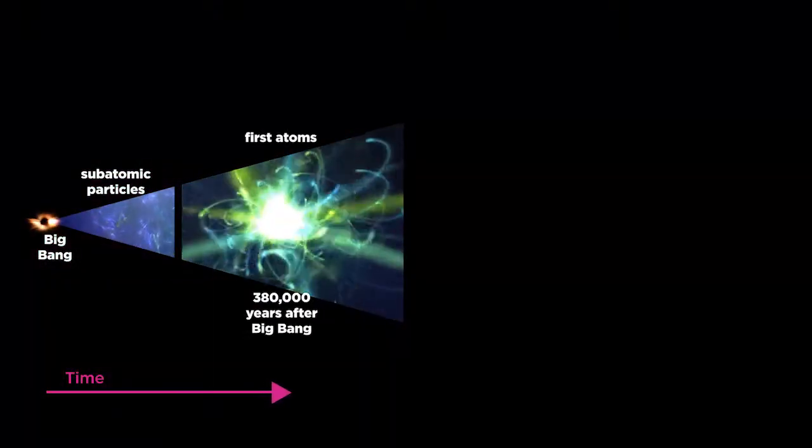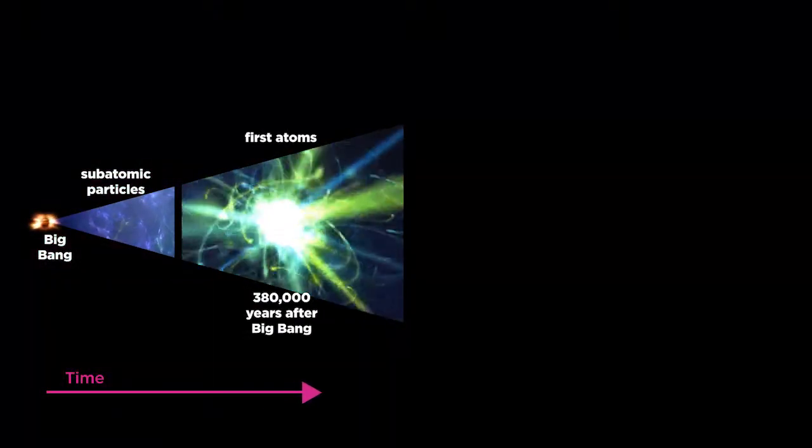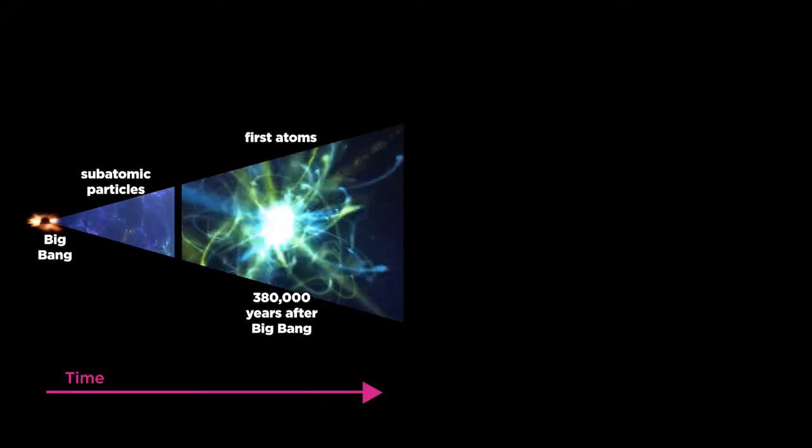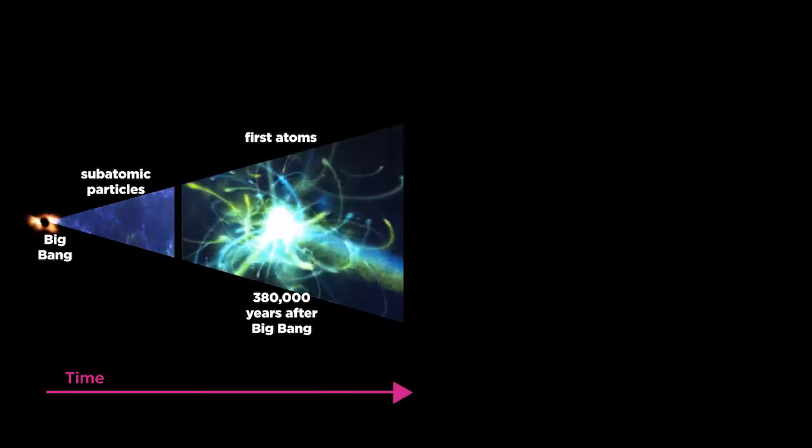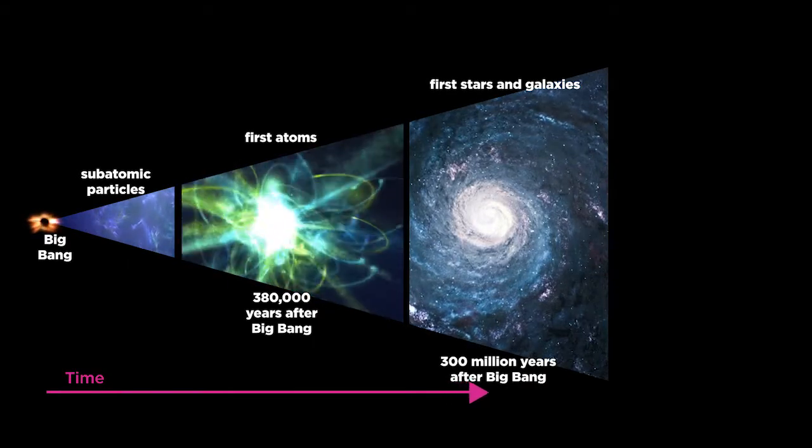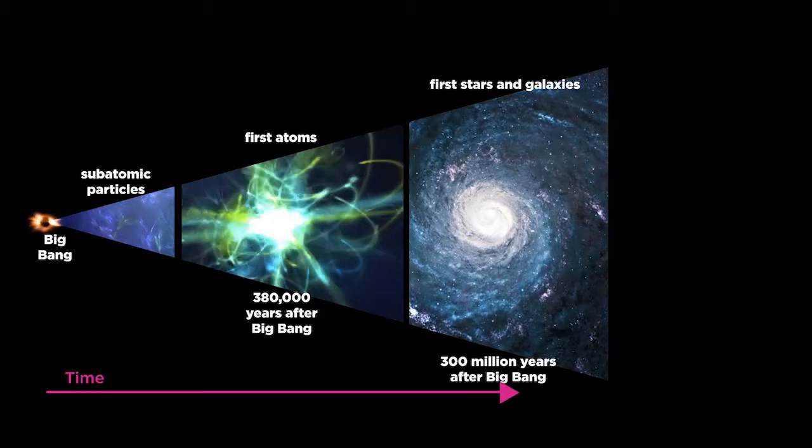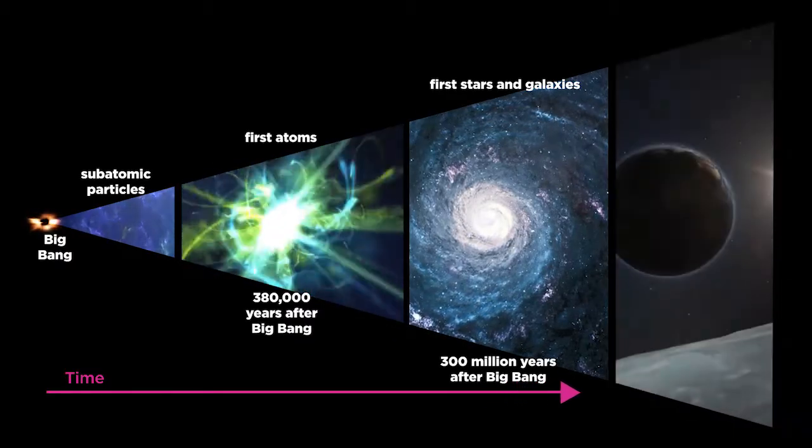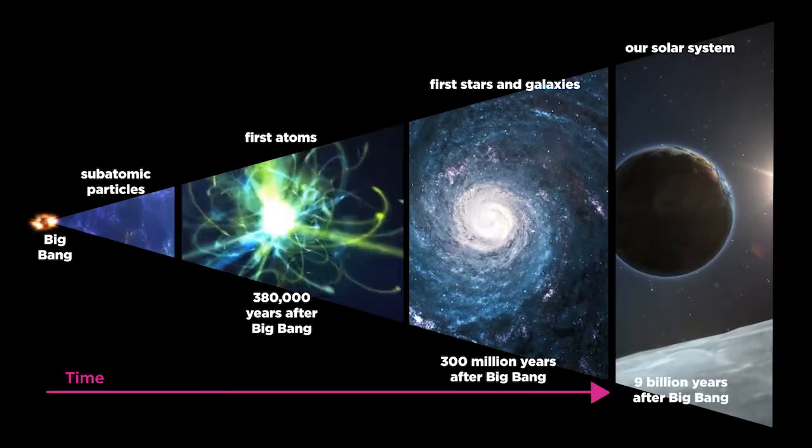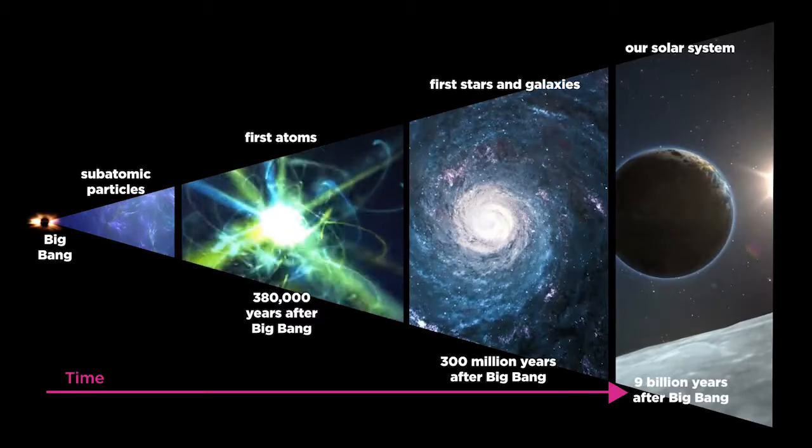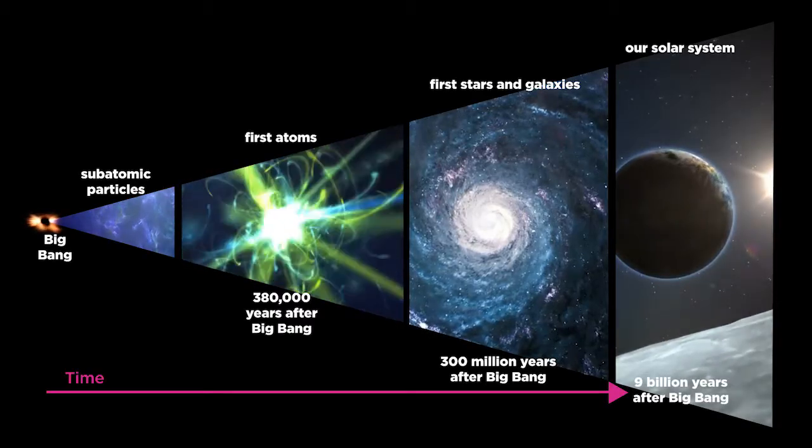Electrons would not be captured by the nuclei to form complete atoms until almost 400,000 years had elapsed. New elements would not form until more than 300 million years had passed and the first stars were born. Our own solar system would not develop for nearly another 9 billion years after the birth of the universe.